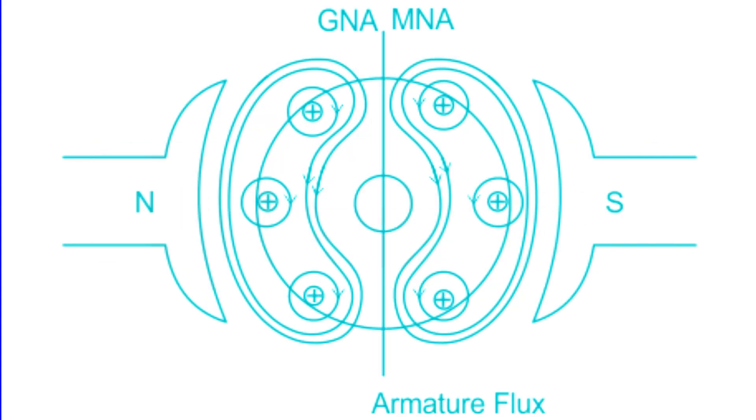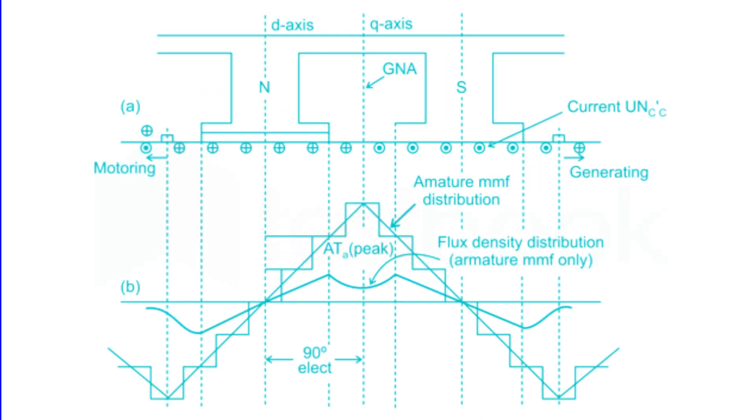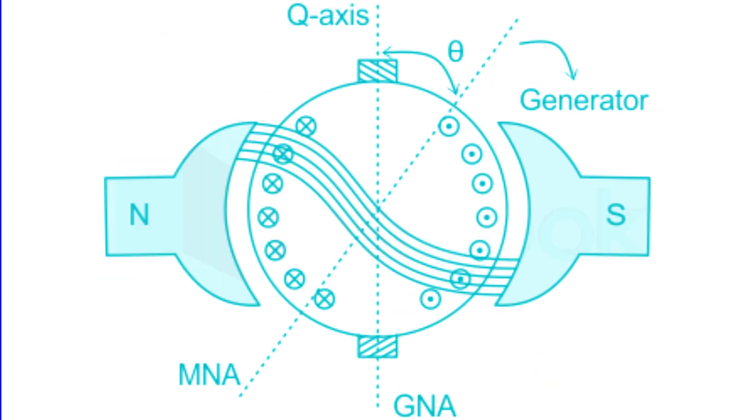However, when the machine experiences load, the armature flux adopts a triangular waveform and aligns along the interpolar axis, which lies between the magnetic poles.